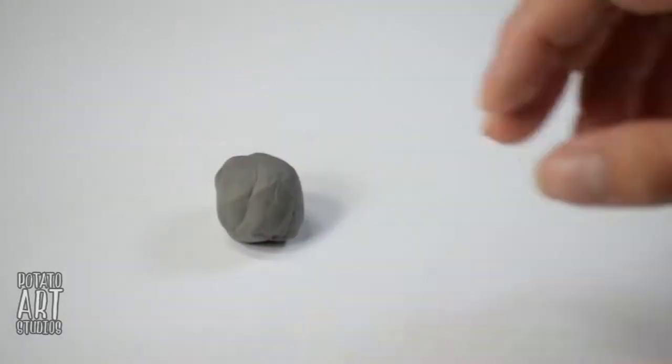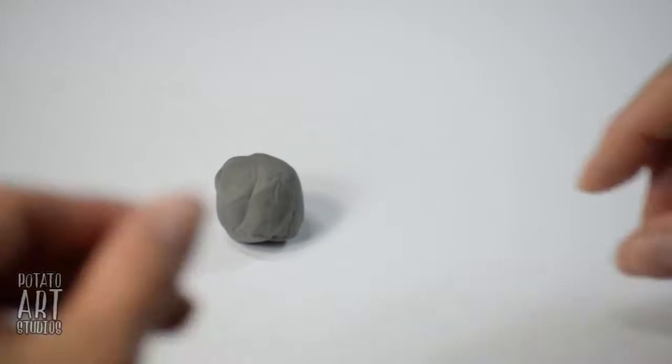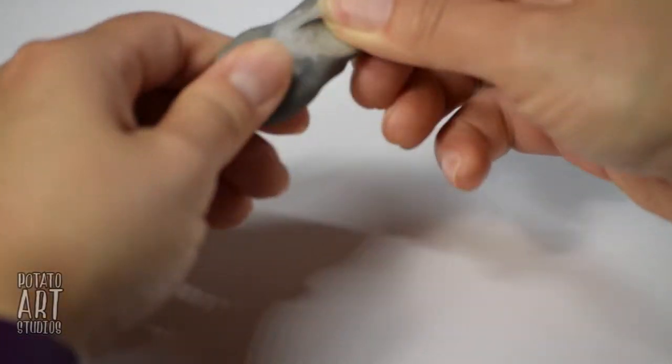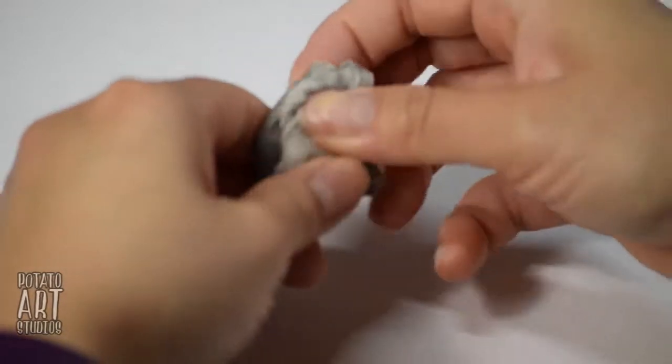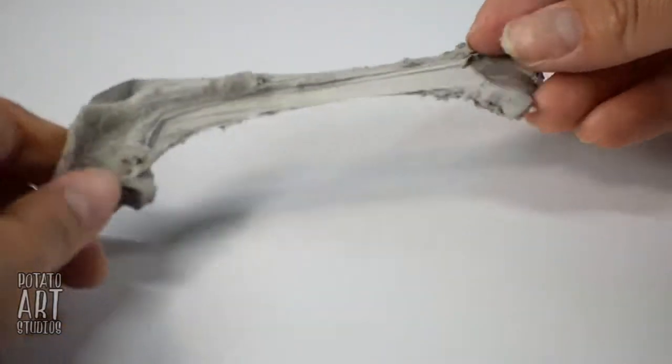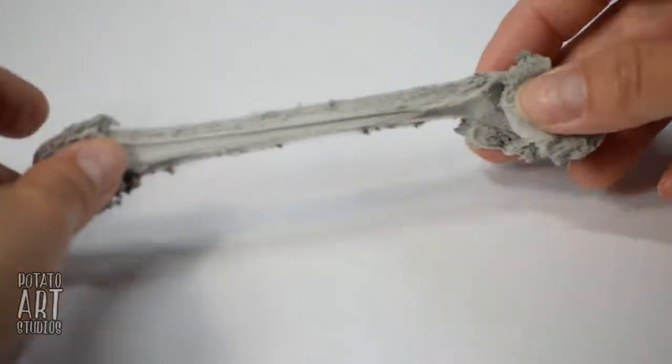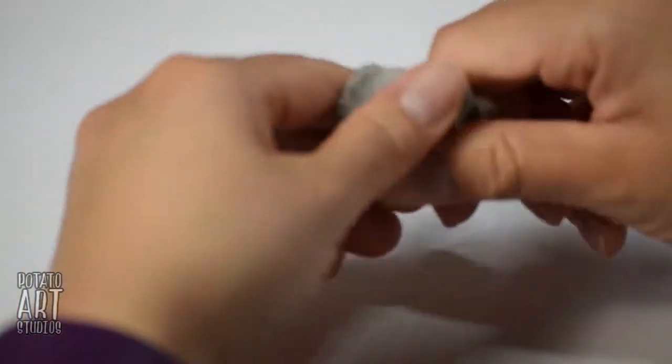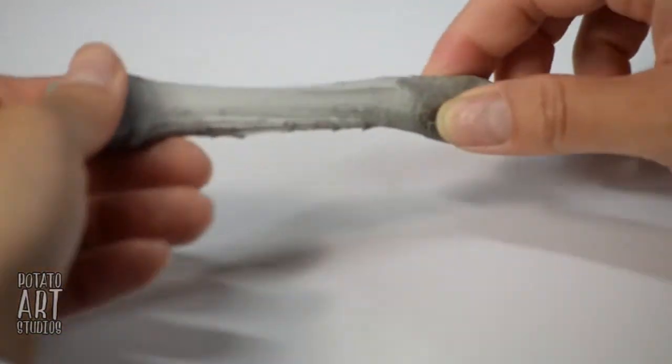Alright, so if you're not familiar with kneaded erasers, they look like this. They're a pretty tacky type of rubber. I think they mostly come in gray, and they're very soft and pliable.